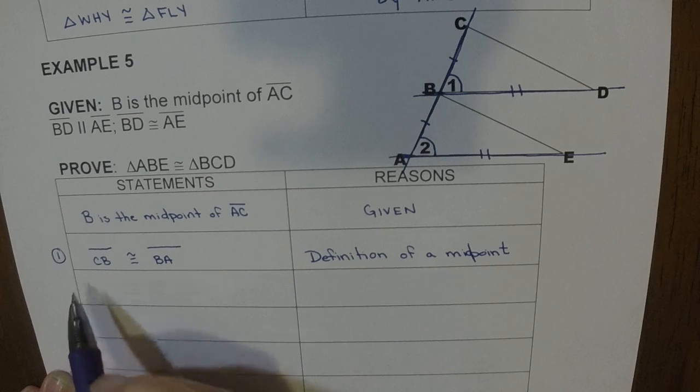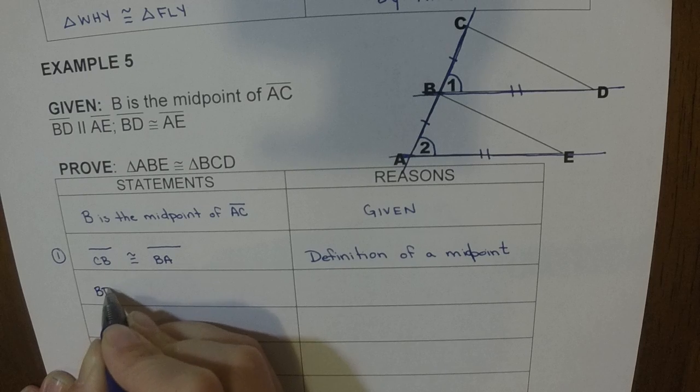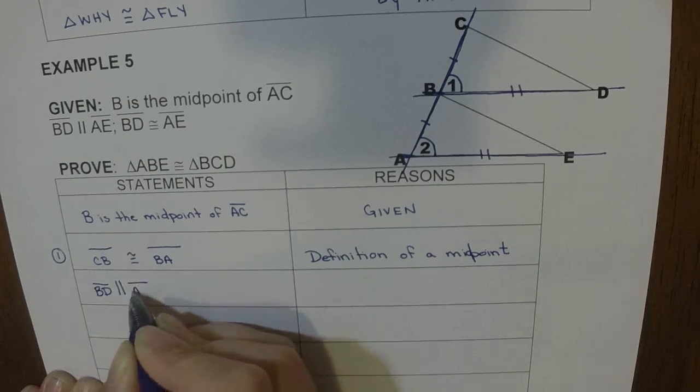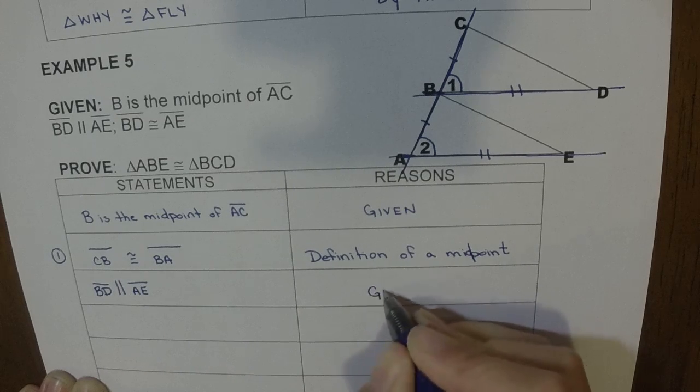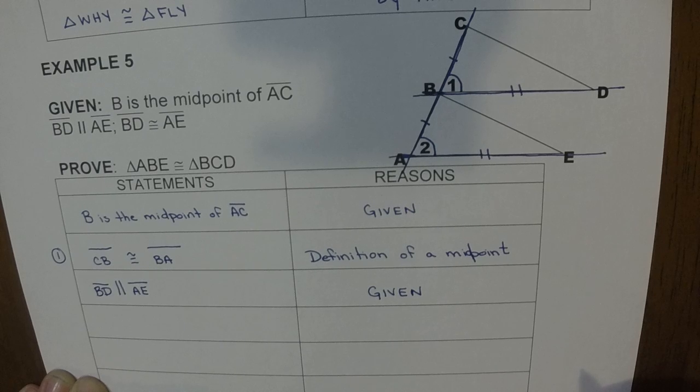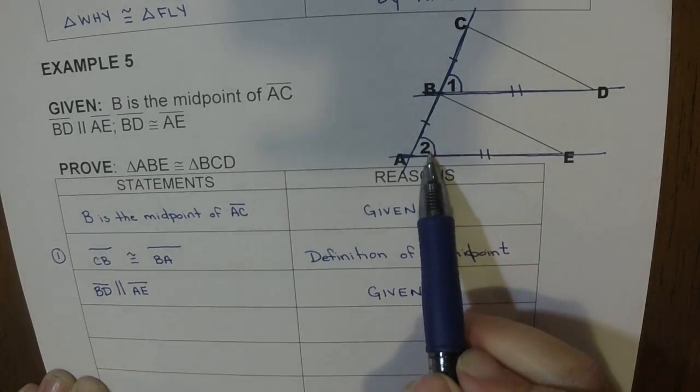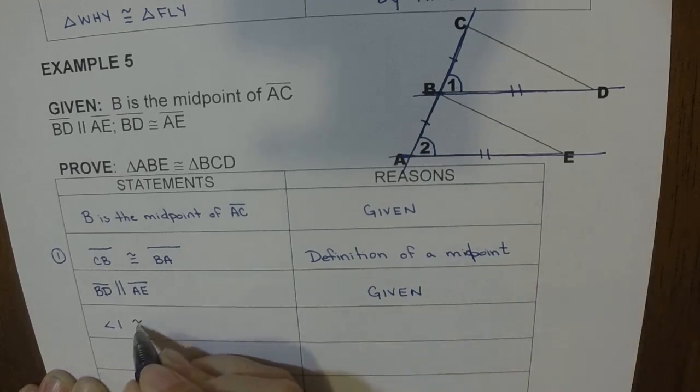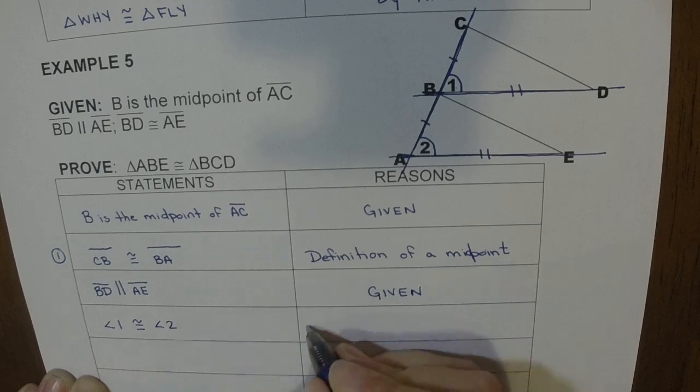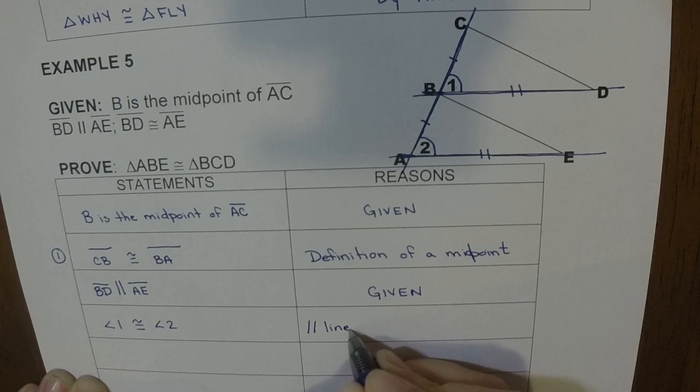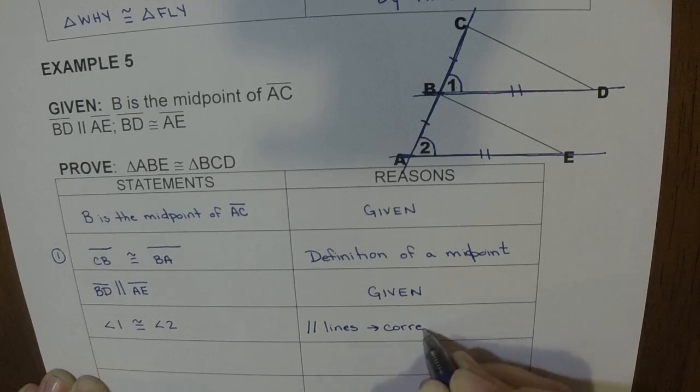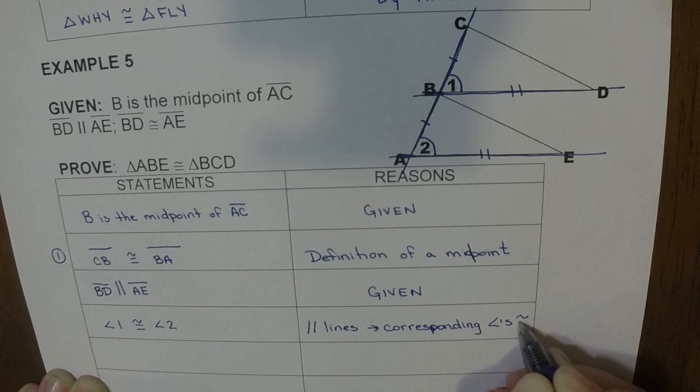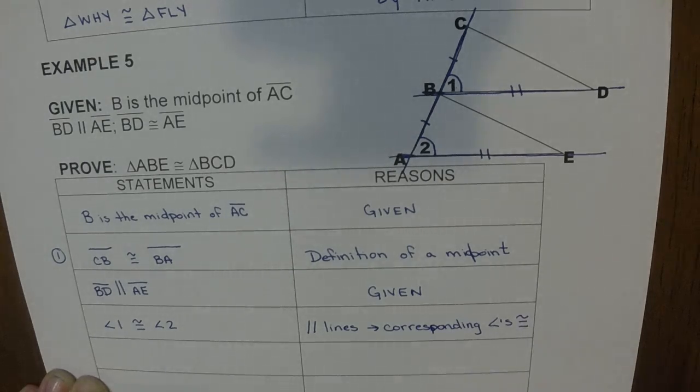So now we go to our second given. BD is parallel to AE. And again, I wrote it because they told me to. It was given. And then from that information, we figured out that one and two were equal because they were corresponding angles. So I would say angle one congruent to angle two. And then we go back to this long one, parallel lines, corresponding angles congruent.